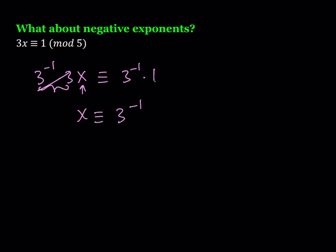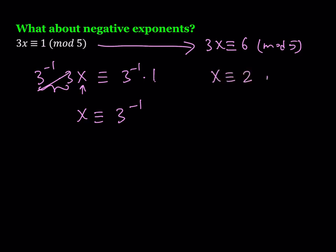To find the inverse of 3 mod 5, think about it mod 5 — we're allowed to add 5 or multiples of 5. So add 5 to 1 to make it 6. This equation is solvable: divide both sides by 3 because 3, 6, and 5 do not share a common factor. That gives us x is congruent to 2 mod 5. So the inverse of 3 is 2 mod 5, which also means the inverse of 2 is 3 — so 2 and 3 are inverses mod 5.